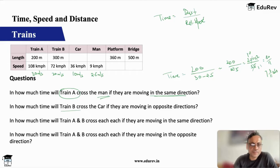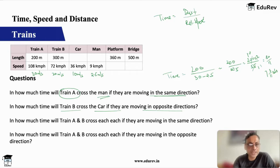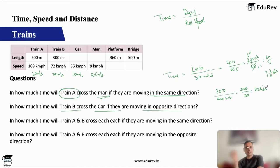Next question: train B crosses the car in the opposite direction. The car has negligible length, so distance is just length of train B = 300 meters. Train B's speed is 20 m/s, car's speed is 10 m/s. Opposite direction, so we add: relative speed = 20 + 10 = 30 m/s. Time = 300 ÷ 30 = 10 seconds.